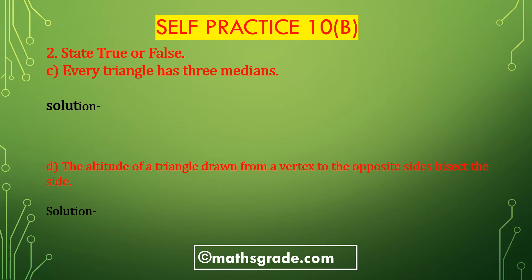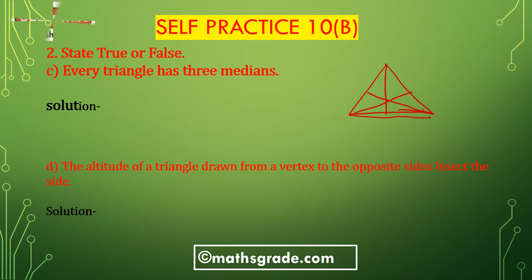Third bit C: Every triangle has three medians. The median is drawn from the vertex to the midpoint of the opposite side of a triangle. So a triangle has three medians. This is true.